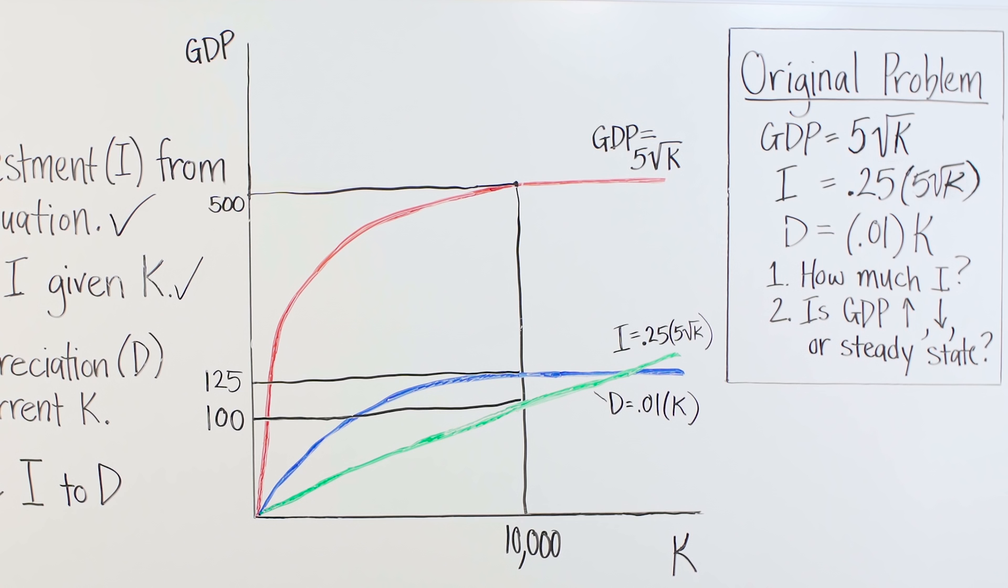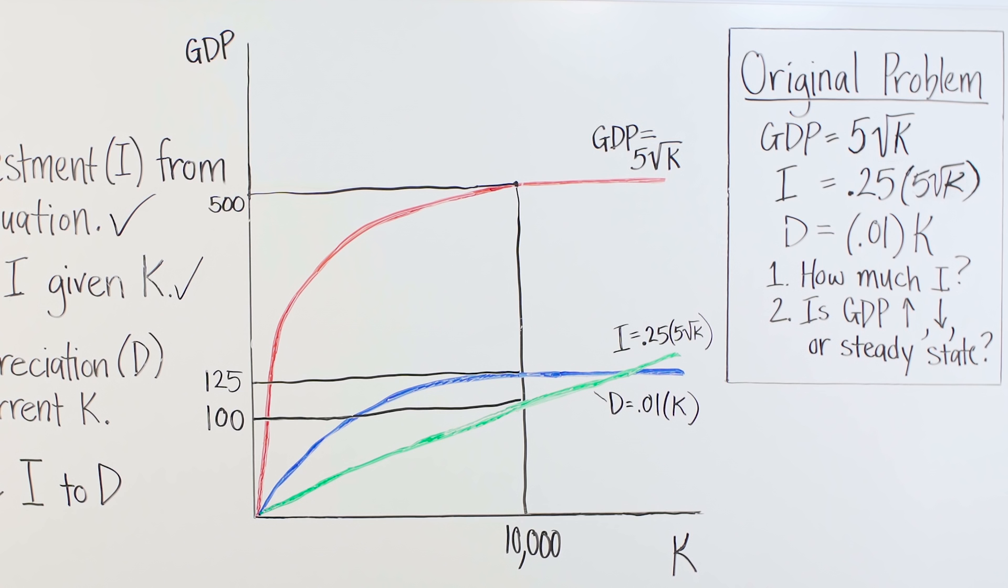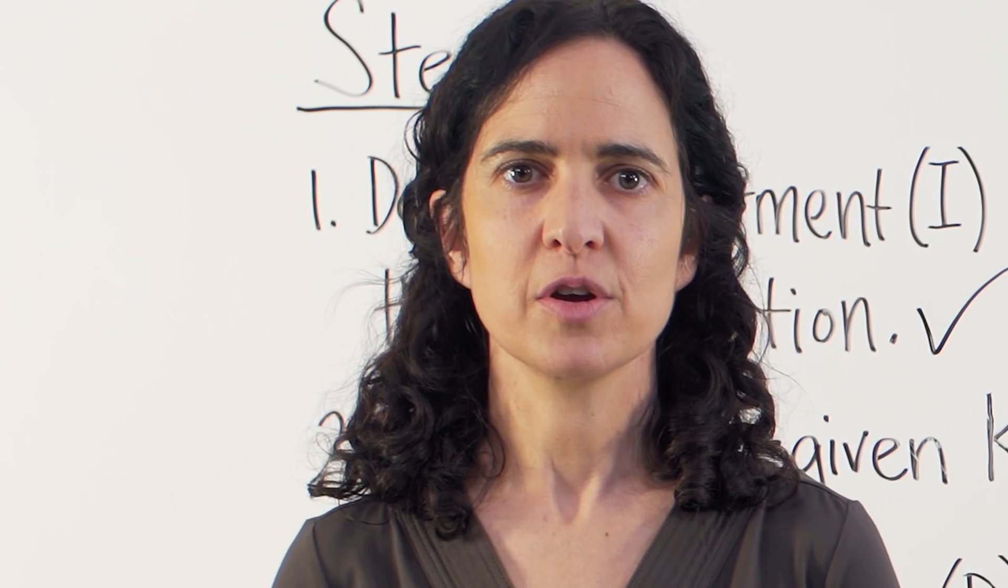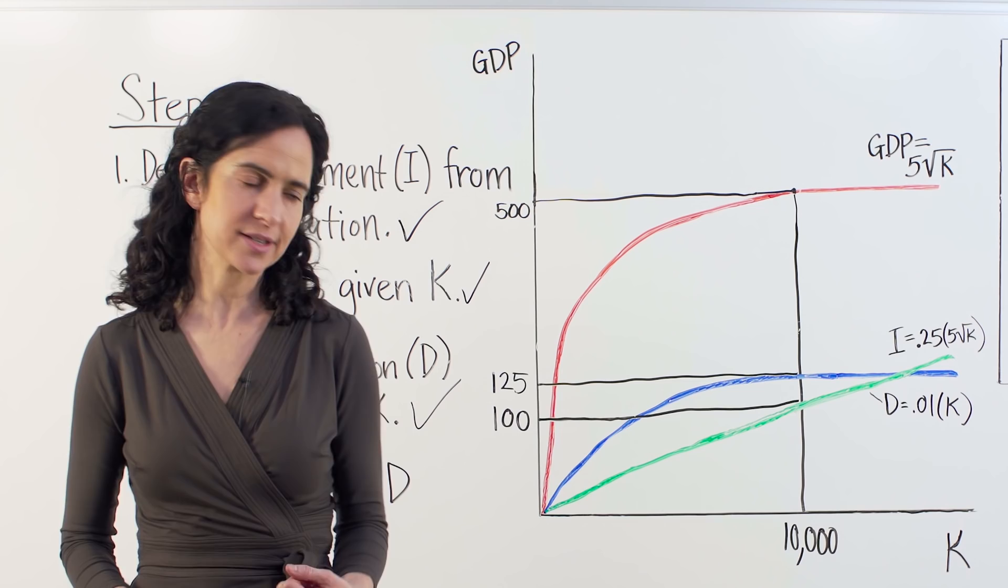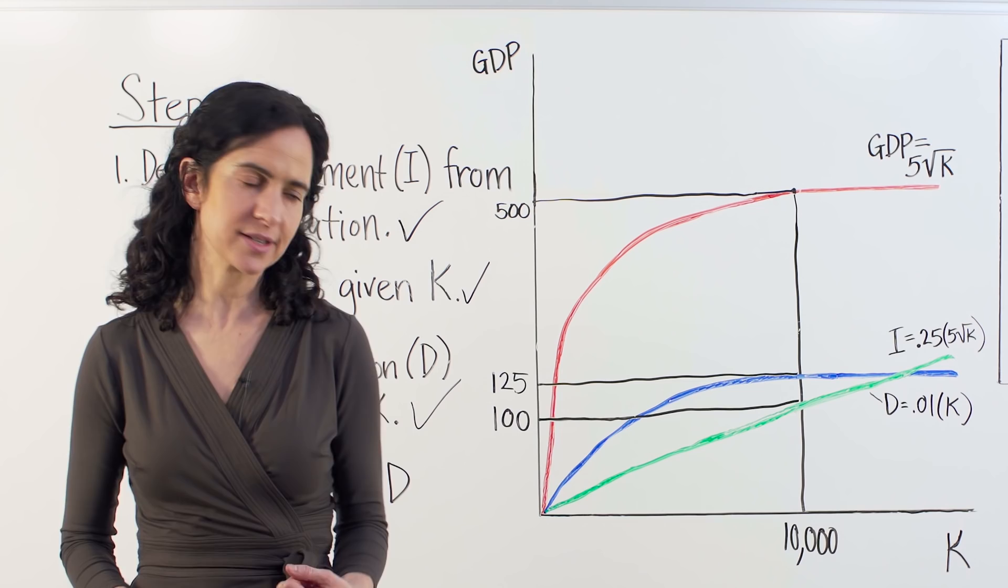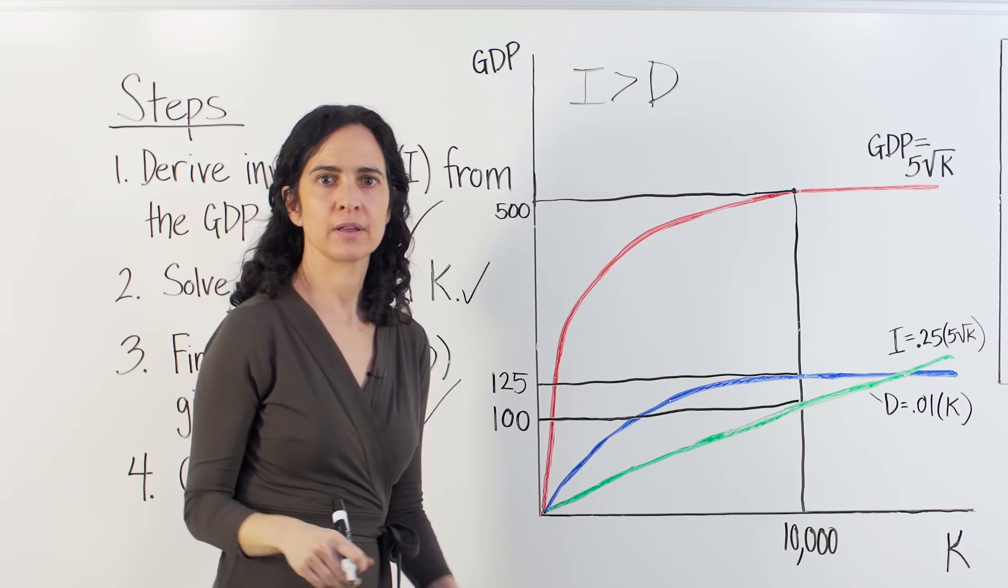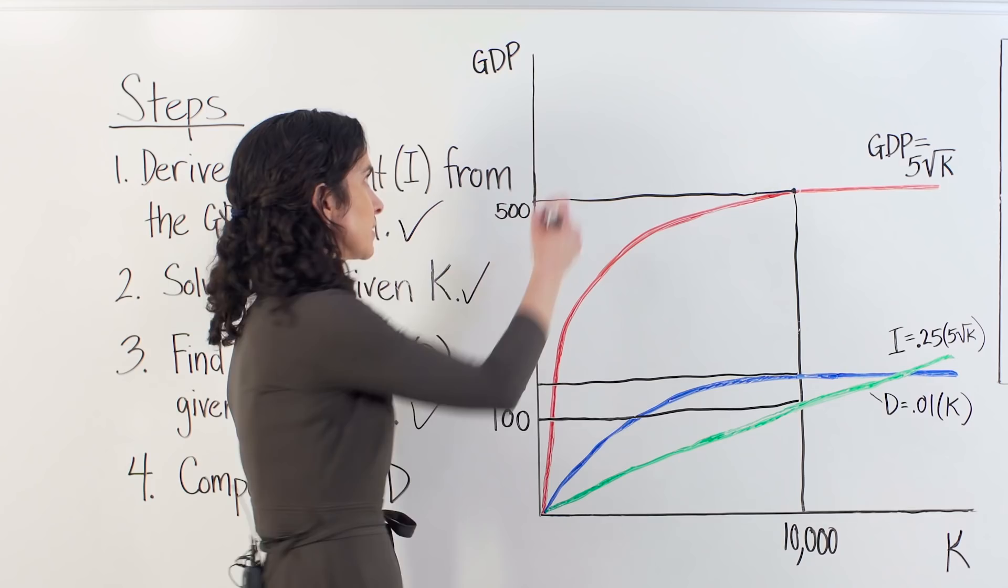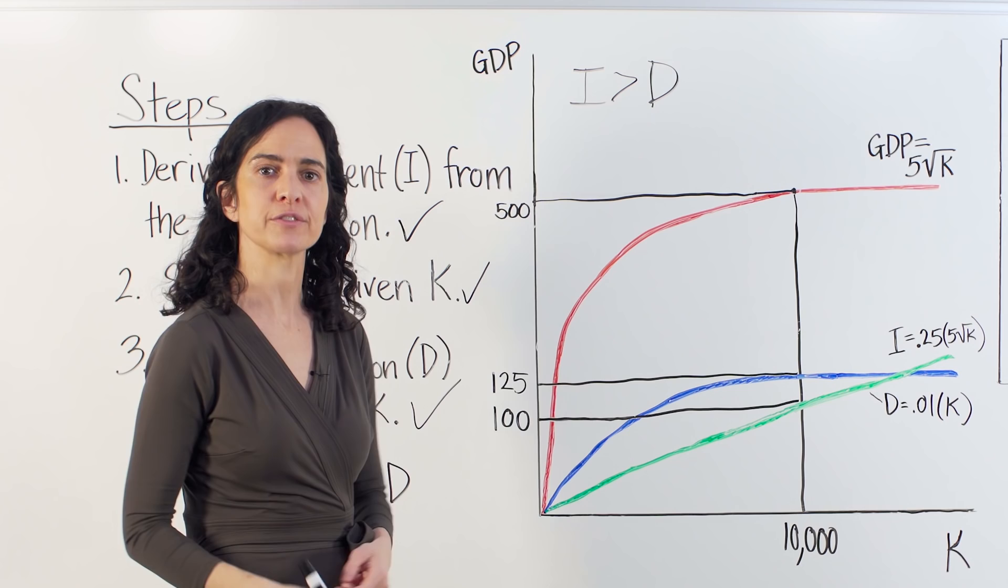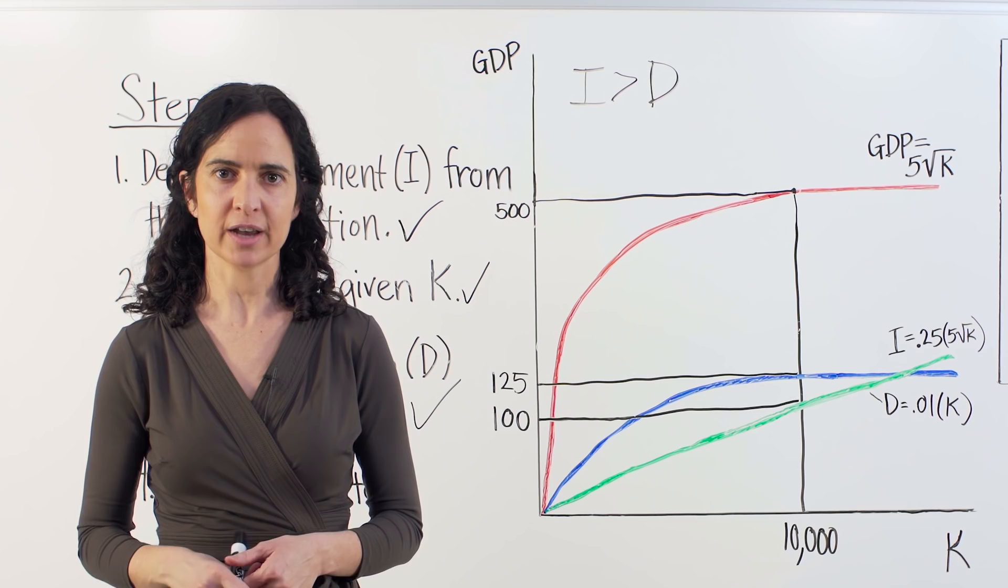We now have investment and depreciation and can compare the two. If the country invests 125 worth of capital and loses 100 to depreciation, then investment is greater than depreciation. And therefore the capital stock will grow by 25 this year as represented by the difference between these two curves. We can now answer that final question. The country's capital stock is increasing and therefore so too is GDP. And that's our answer.